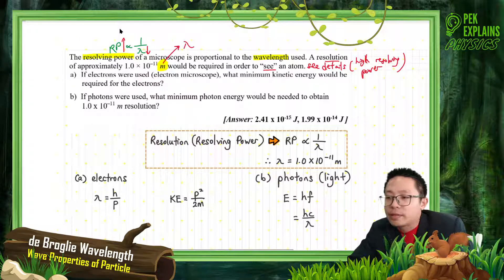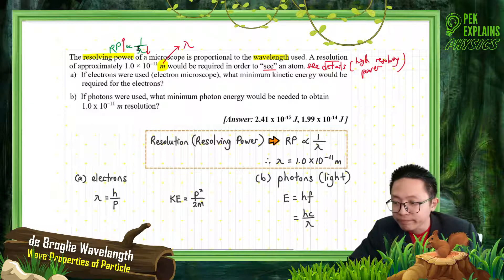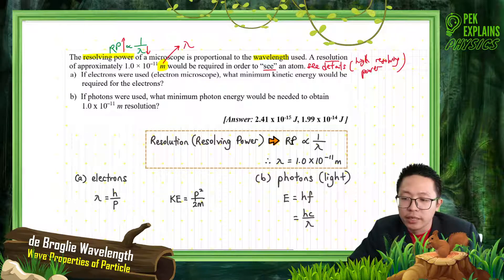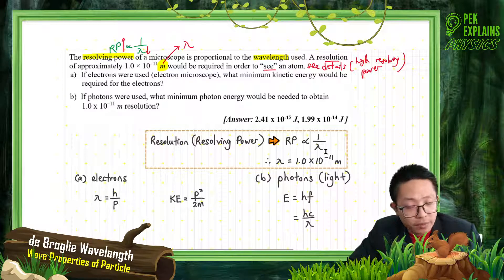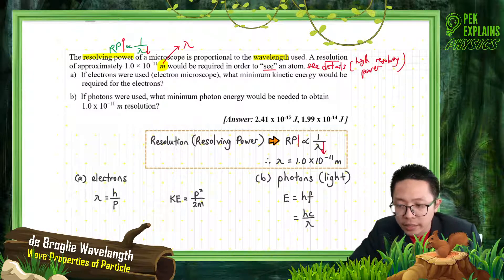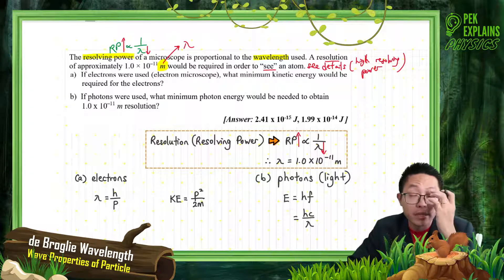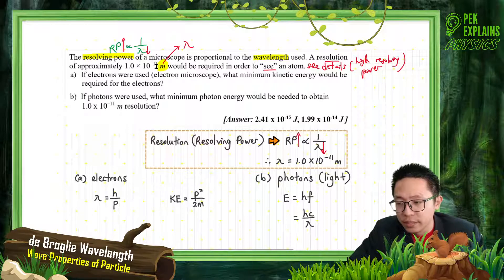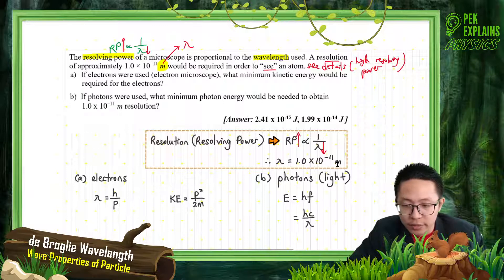This one is the wavelength. So, resolution or resolving power is actually the relationship between resolving power and wavelength. It is inversely proportional. The smaller the wavelength, the higher the resolution or the higher the resolving power. So now the wavelength given is in meters: 1×10⁻¹¹.